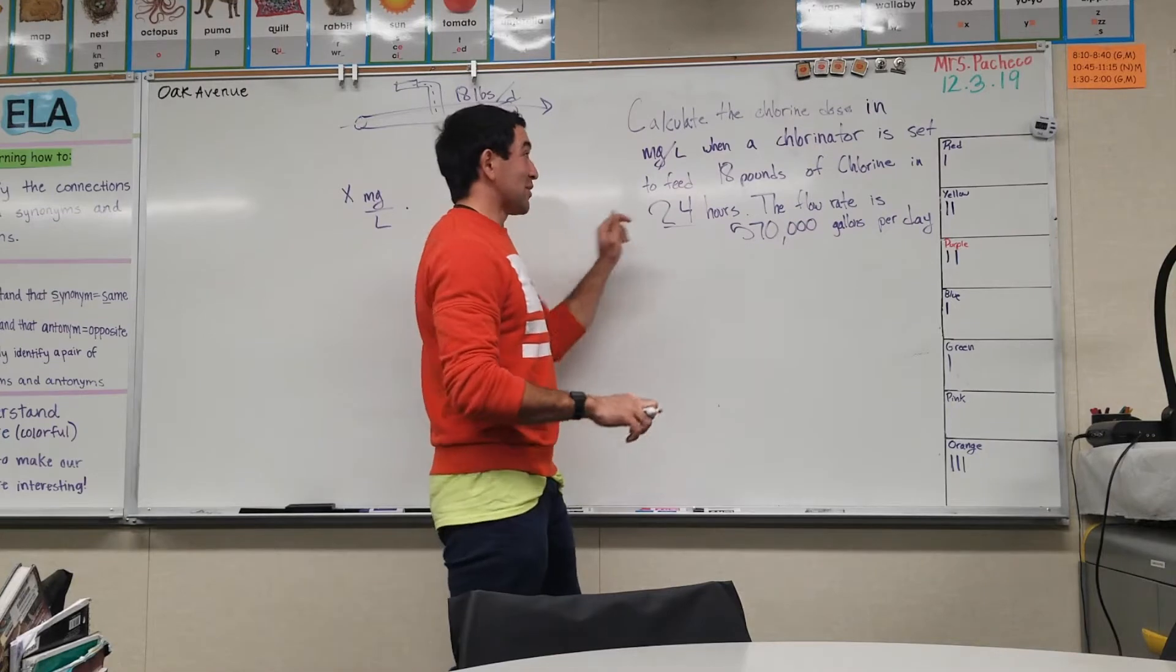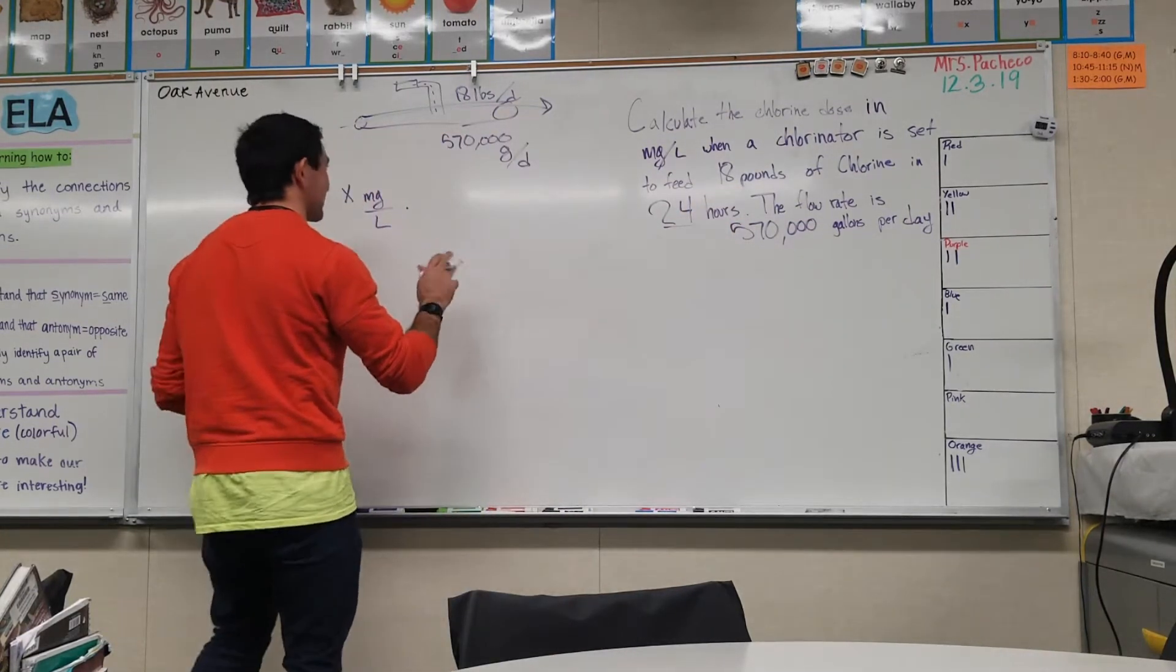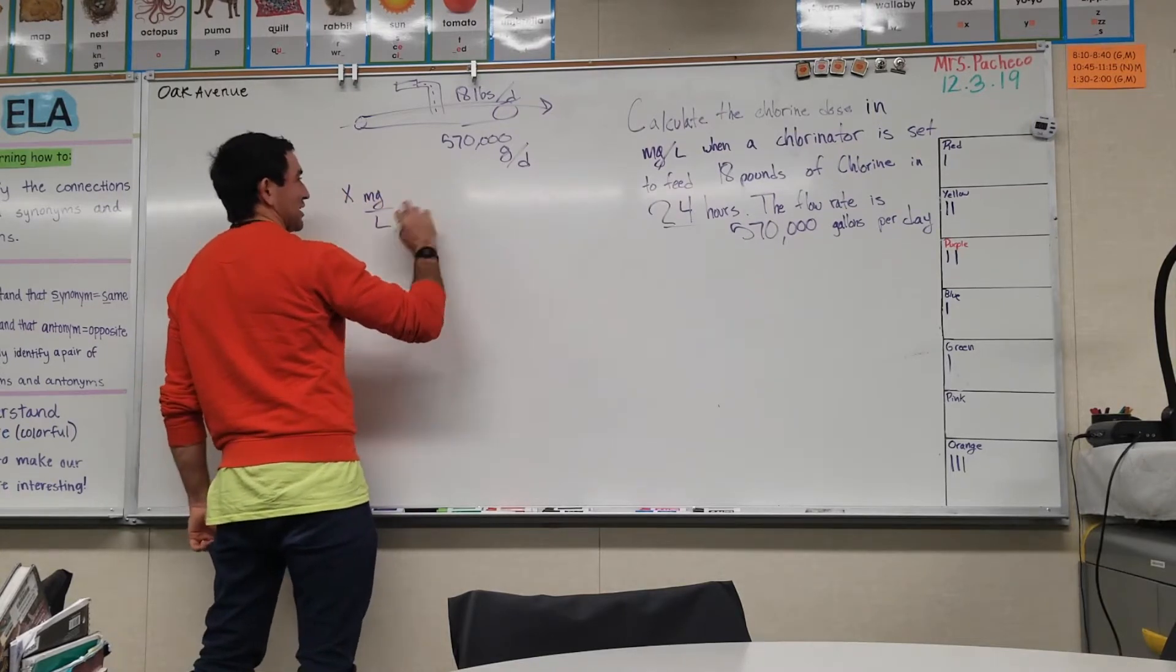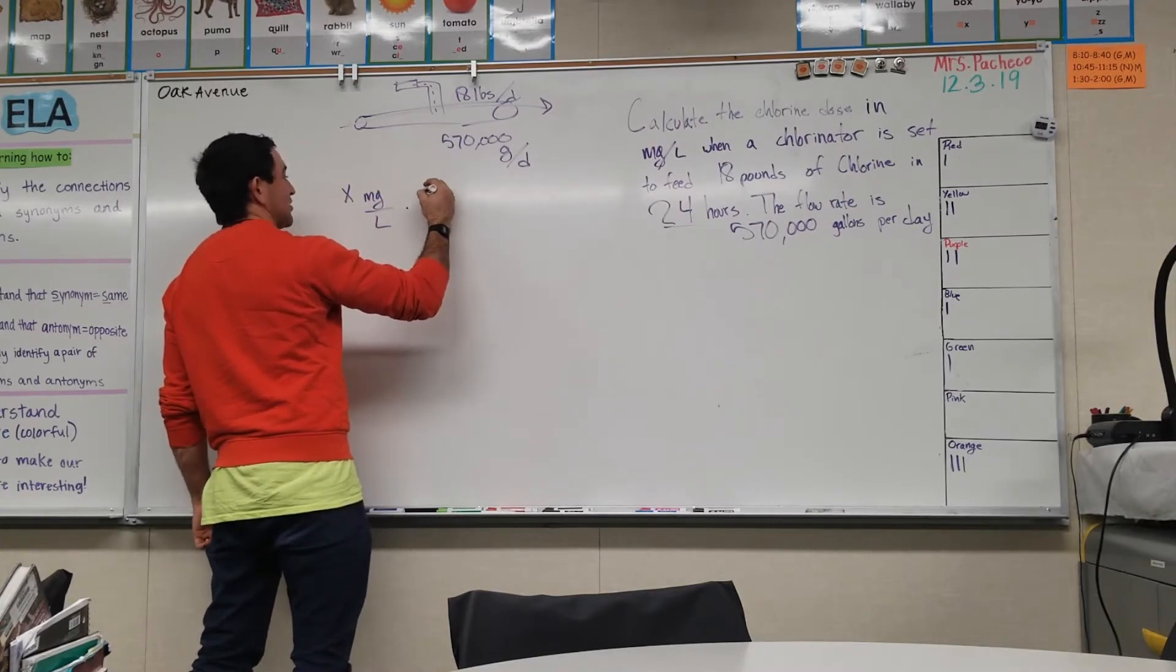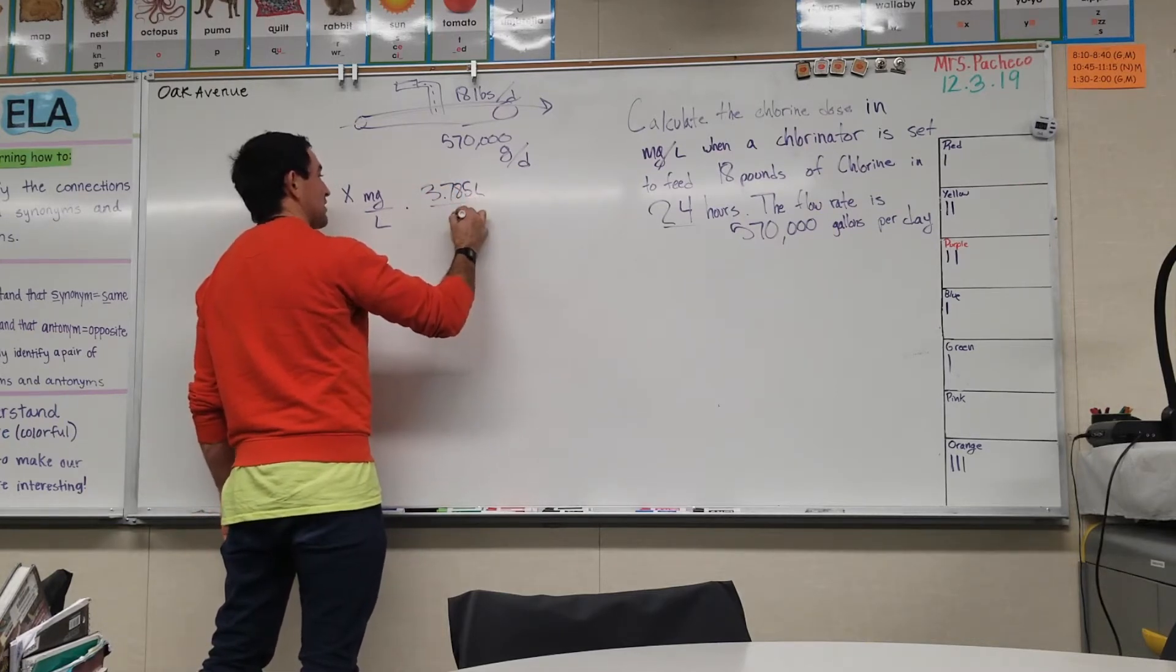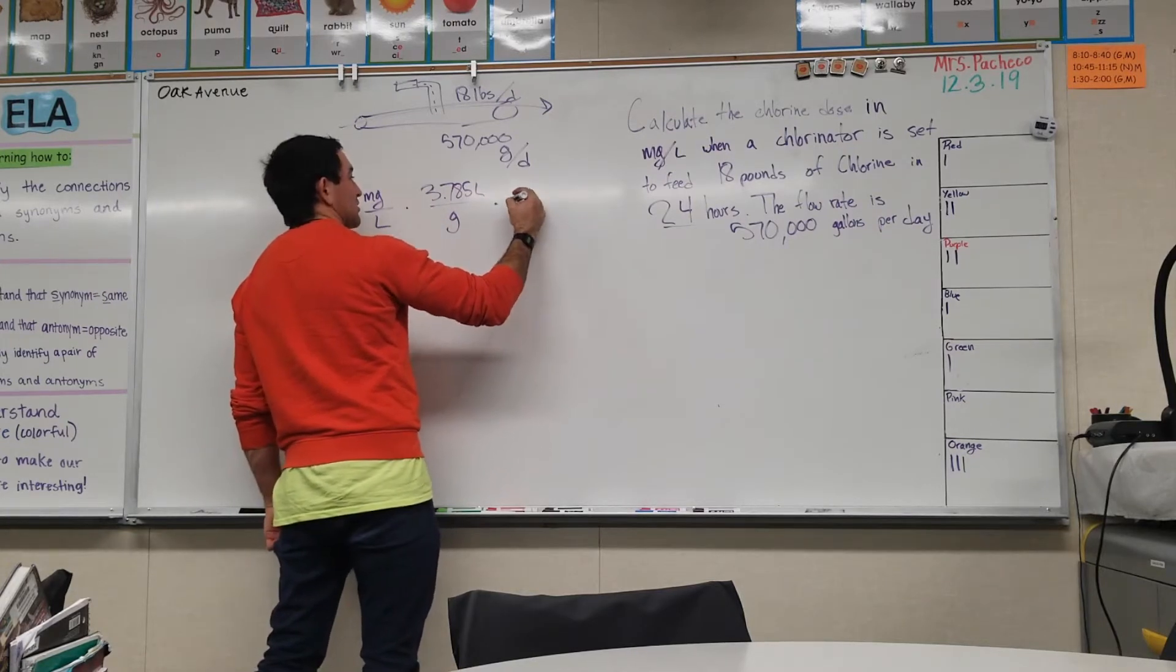We know that pounds per day is 18, so that's what's fun. We're putting together the pieces of a puzzle. So do the same things to get yourself to pounds. Liters cancel that out, 3.785 liters to the gallon. Then try to get rid of milligrams.